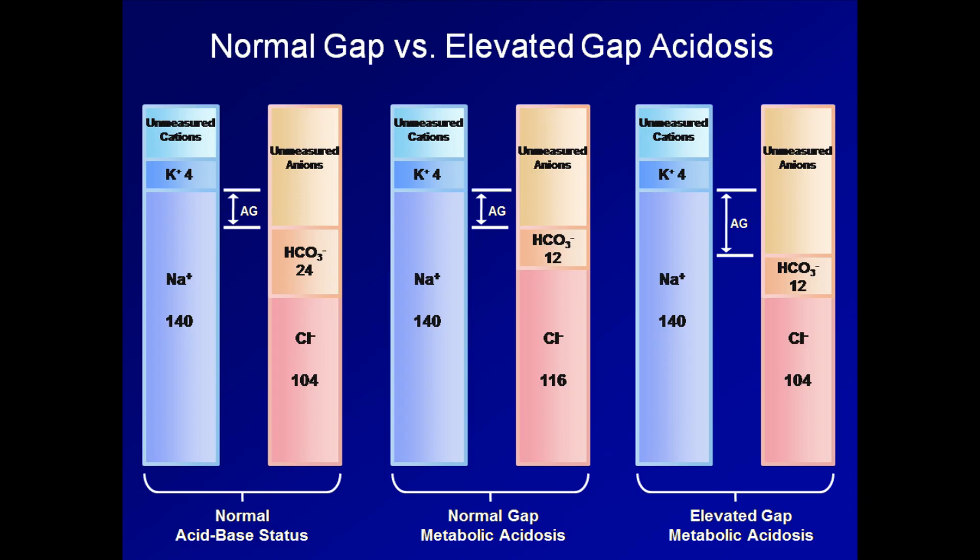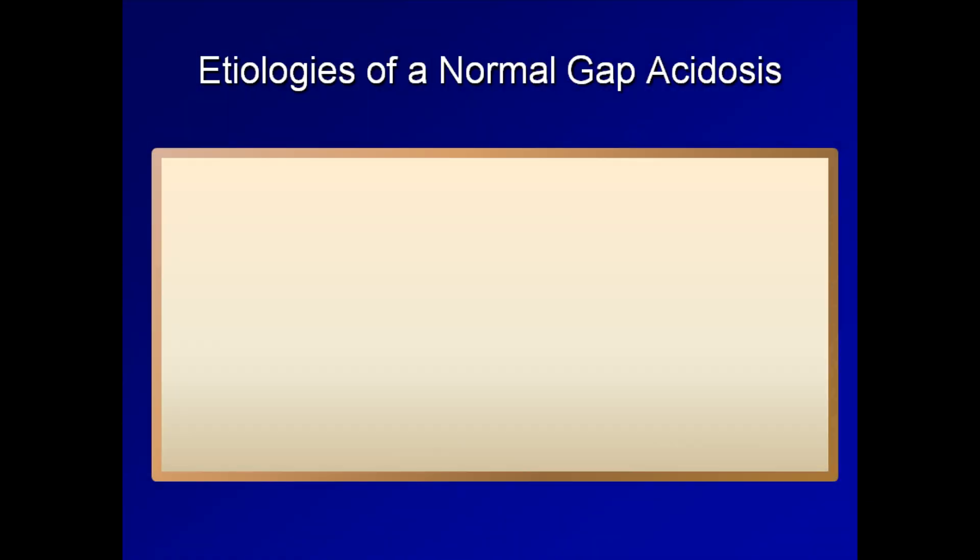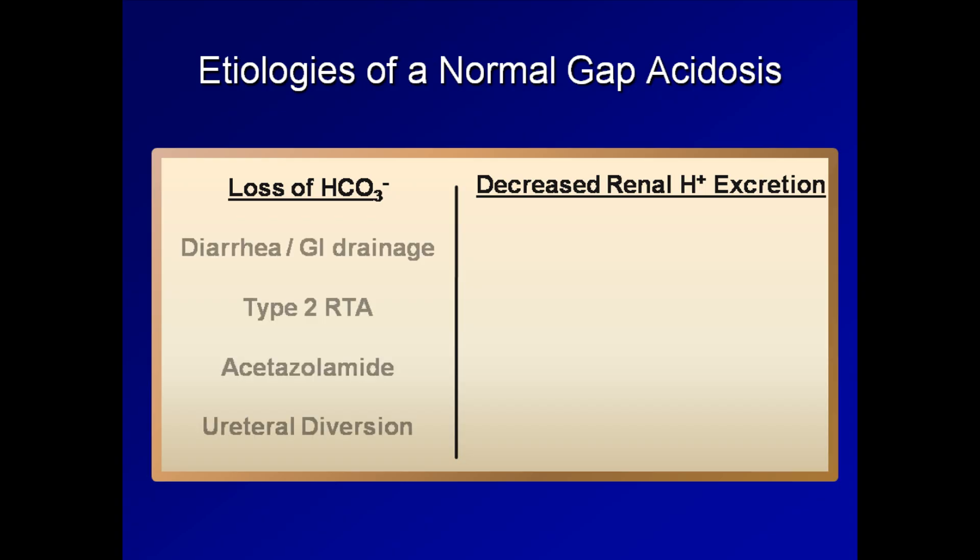I will discuss the differential diagnosis of both normal gap and elevated gap metabolic acidosis in more detail in later lectures. However, I'll quickly run through the list to give you an idea of how assessment of the anion gap can assist with determining possible diagnoses. A normal gap metabolic acidosis can be due to either the loss of bicarbonate or due to decreased renal hydrogen excretion. The former can be due to diarrhea or various forms of GI drainage, type 2 renal tubular acidosis, the carbonic anhydrase inhibitor acetazolamide, and as a chronic complication of ureteral diversion surgery. Decreased renal excretion of hydrogen can be seen in renal failure or either in type 1 or type 4 RTA, the latter being largely synonymous with hypoaldosteronism.